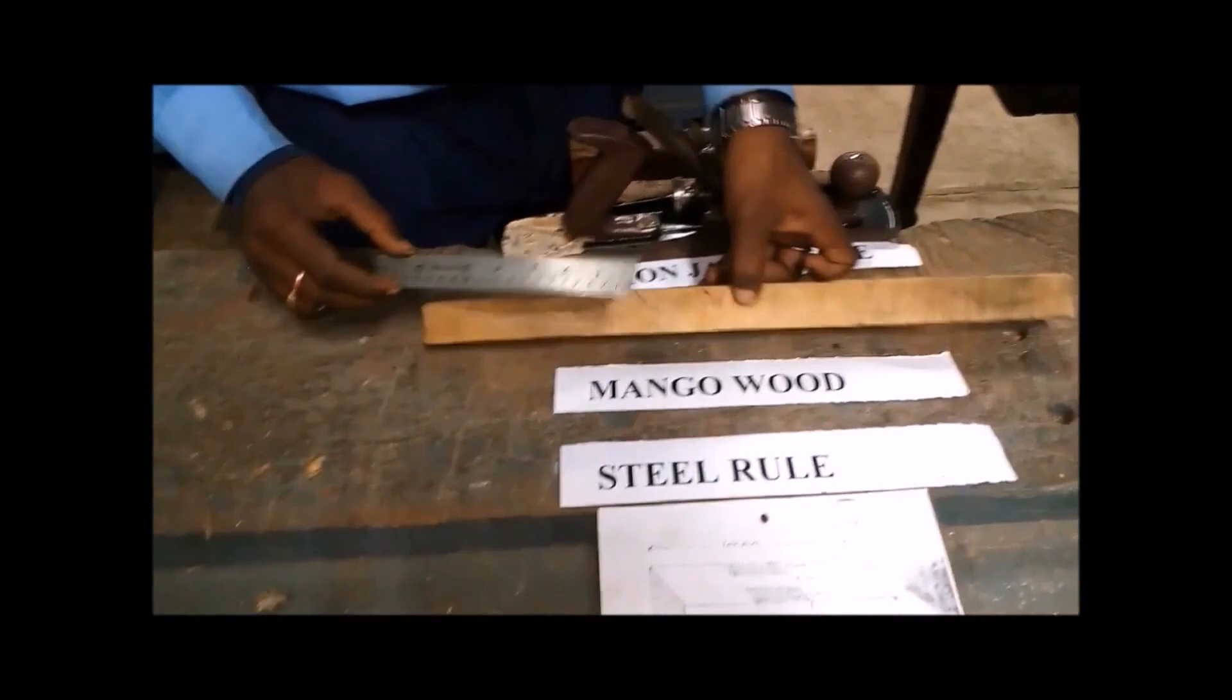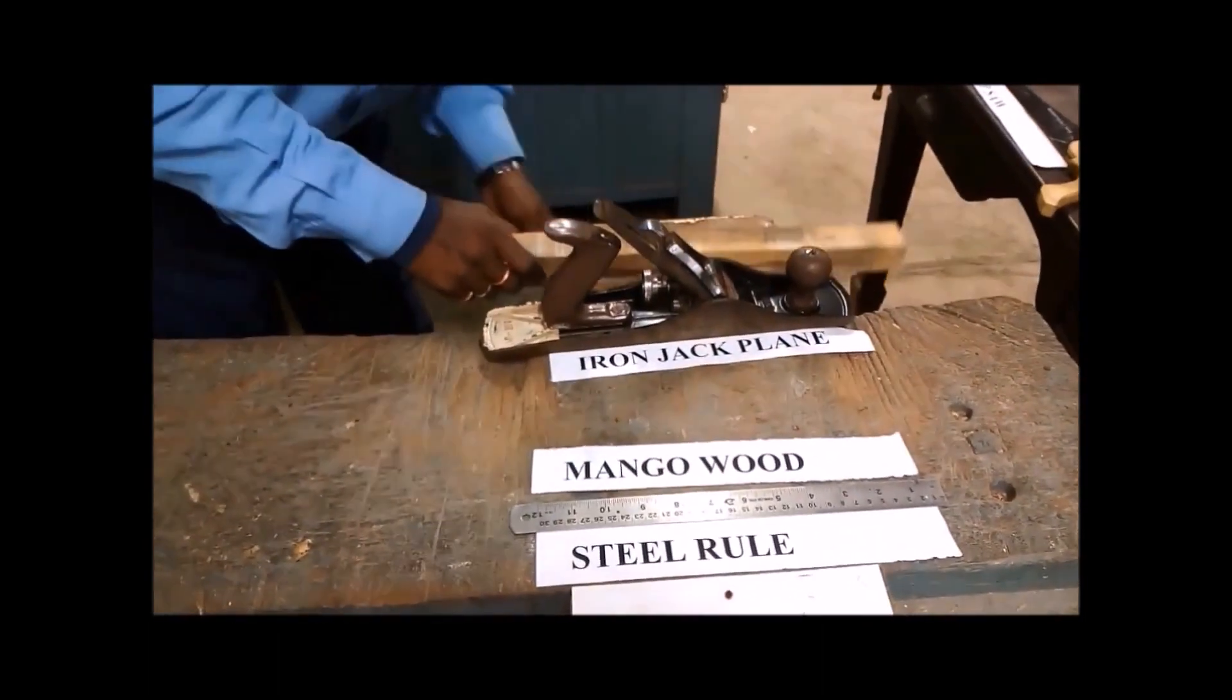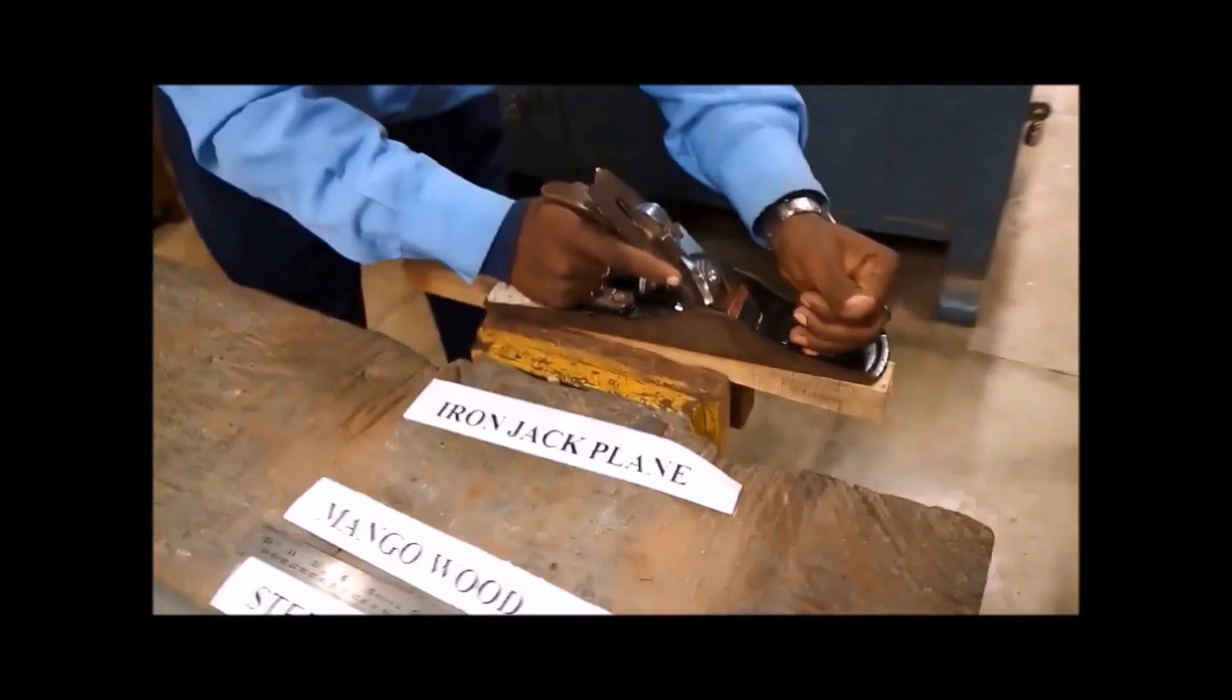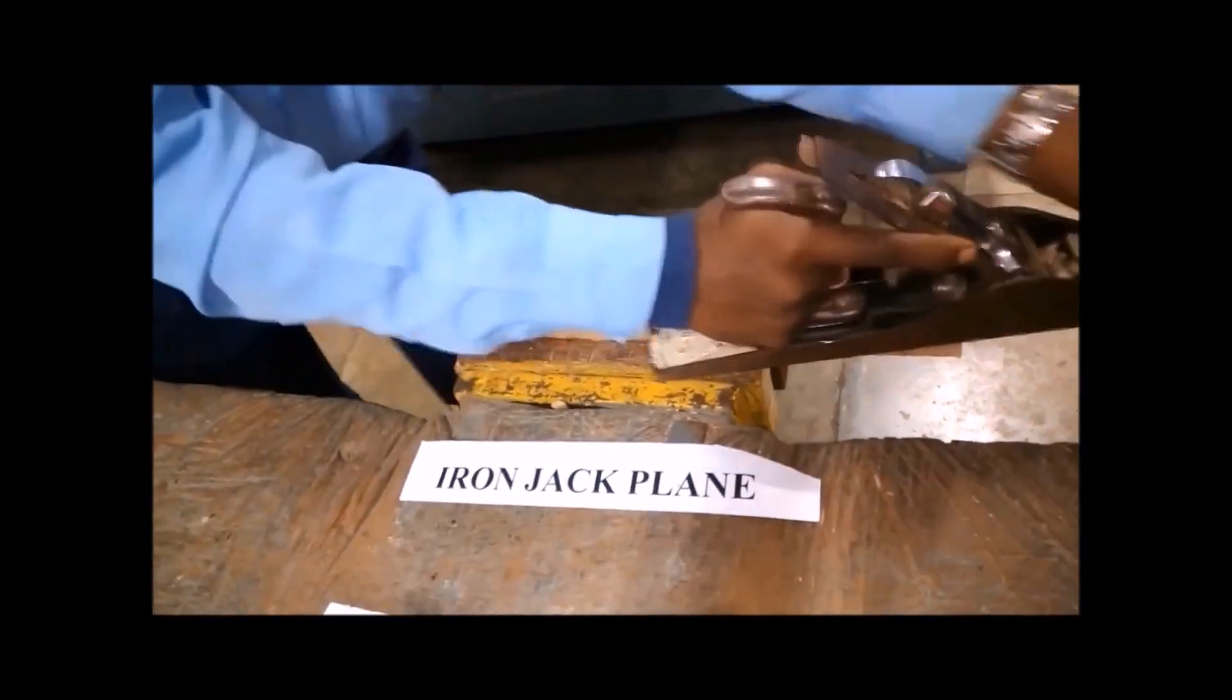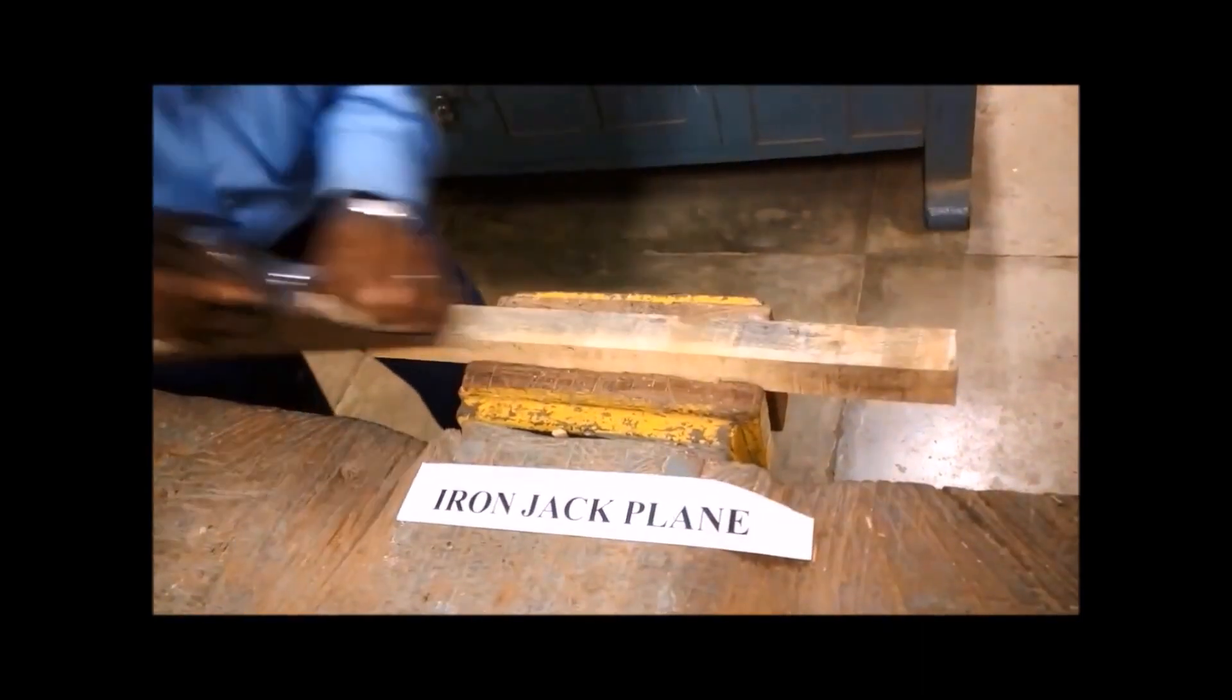This is the given drawing of the T-bridle joint. Raw material is mango wood. Ensure the dimensions of the raw material suitable for making the joint. Now we are going to start the job. First, we hold the job in the carpentry vise.